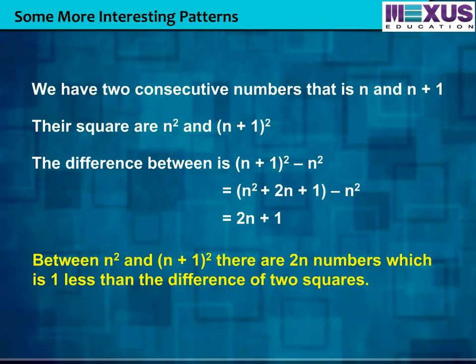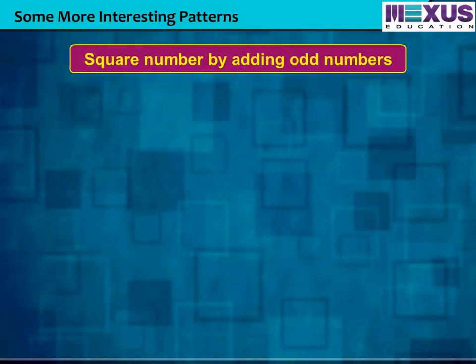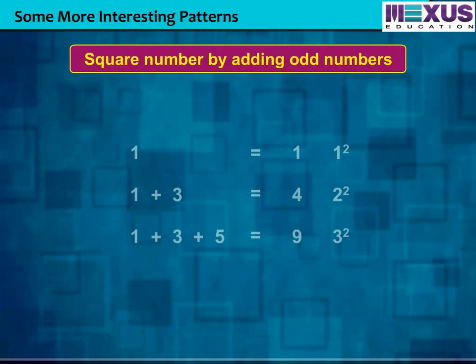Now let us understand another pattern of square numbers: by adding odd numbers. In this you will learn how by adding odd numbers we get a perfect square. Look at this: 1 is an odd number which equals 1 square.